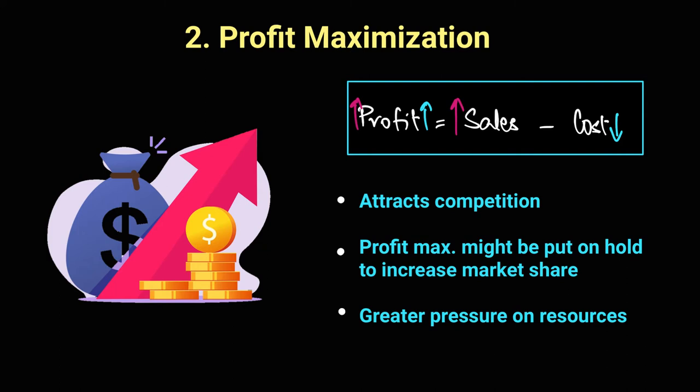That's exactly the kind of challenge businesses have to overcome. In terms of sales, there are two approaches: either make things cheaper so people will buy more, or simply make them better. Both ways will lead to an increase in sales, which will increase profit — and that's what businesses are looking for when pursuing profit maximization.